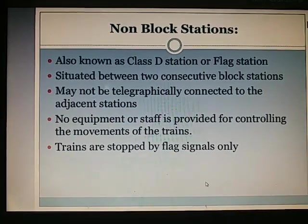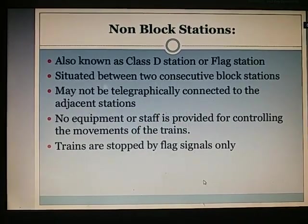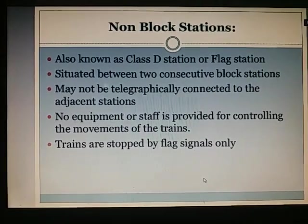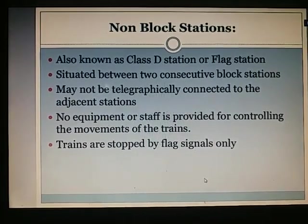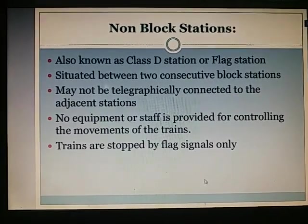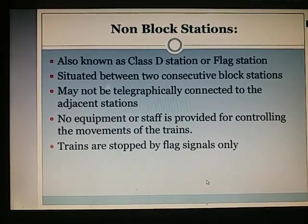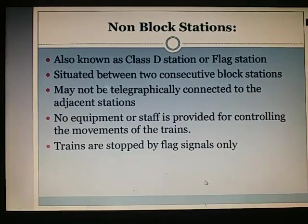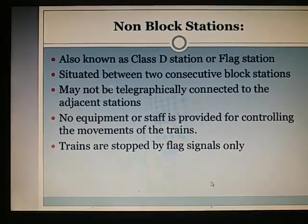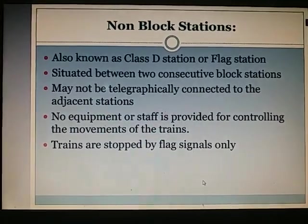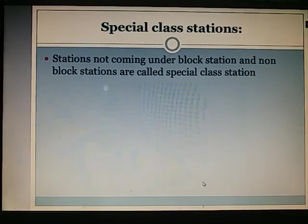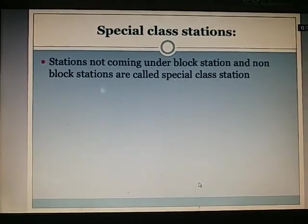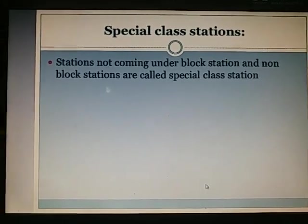Non-block stations or Class D or flag stations: situated between two consecutive block sections, they may not be telegraphically connected to adjacent stations, and no equipment or staff is provided for controlling train movements. Trains are stopped by flag signals only. Special class stations are those not coming under block stations or non-block stations.